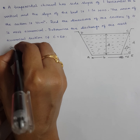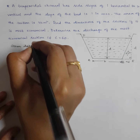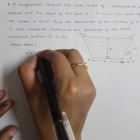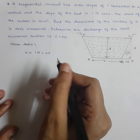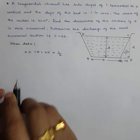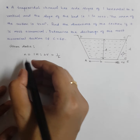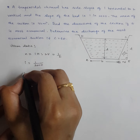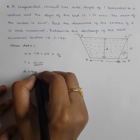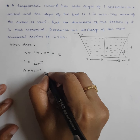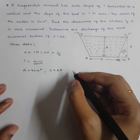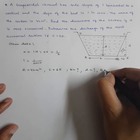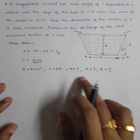Let's write the given data. Side slope n equals 1 horizontal to 2 vertical, meaning n equals 1/2. Bed slope I equals 1 by 2000. Area A equals 42 m². Chezy's constant C equals 60. We need to calculate B, D, and Q.